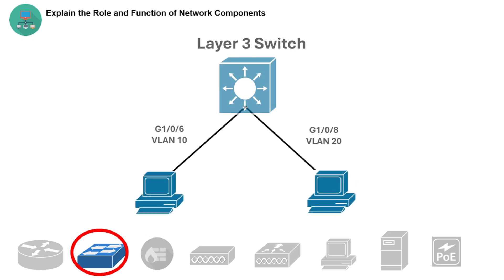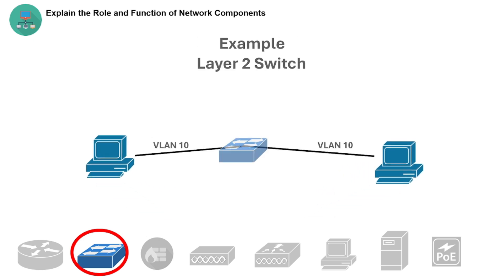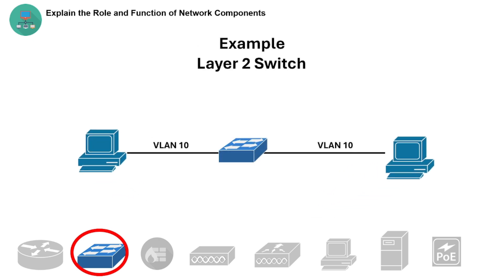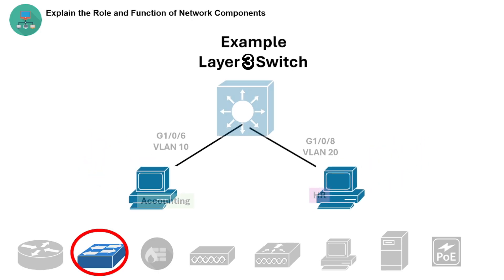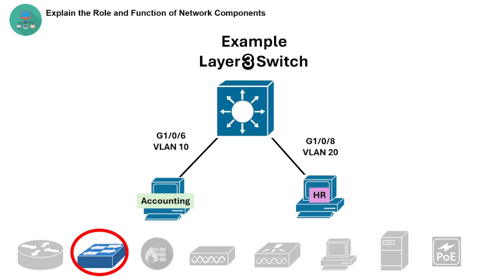For example, a layer 2 office switch connects all computers on the same floor or VLAN, while a layer 3 switch performs inter-VLAN routing between accounting and HR networks.